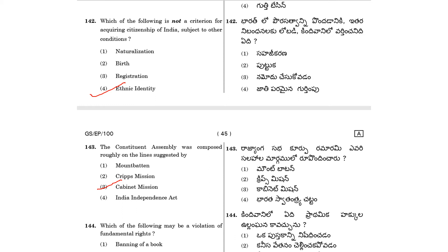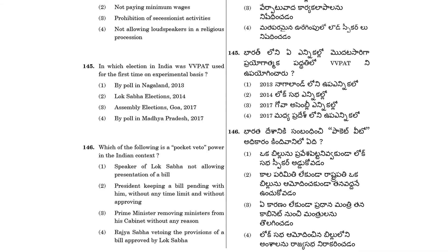Question 144: Which of the following may be a violation of fundamental rights? Options include: banning of a book, not paying minimum wages, prohibition of secessionist activities, and not allowing loudspeakers in a religious procession. Options 1 and 2 are correct — banning a book violates a fundamental right and not paying minimum wages is also a violation. So options 1 and 2 are the correct answers.